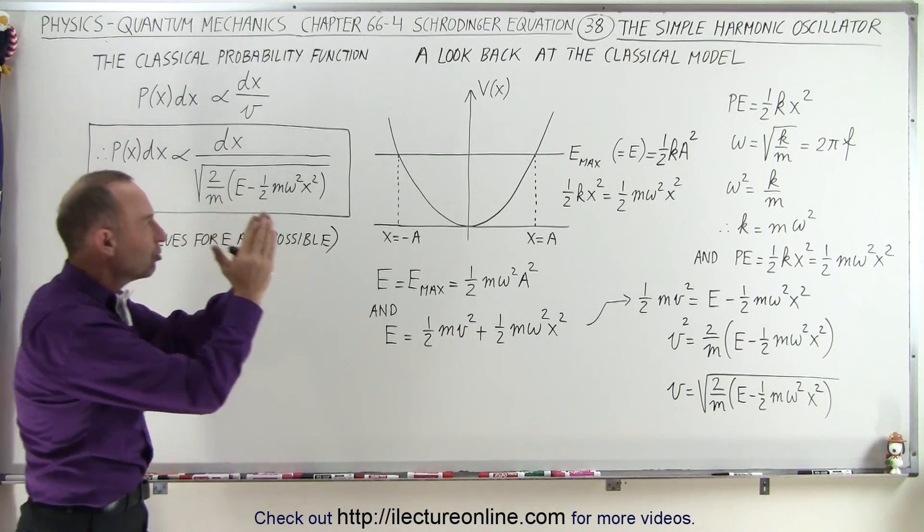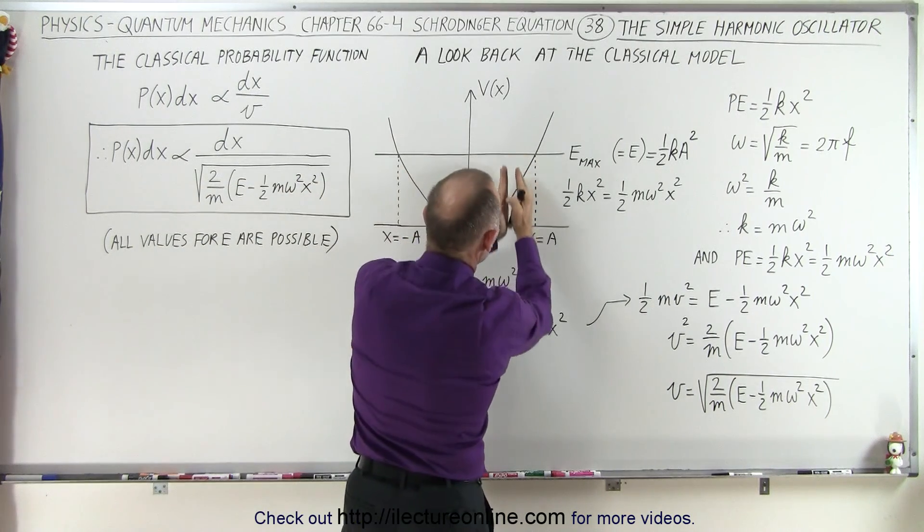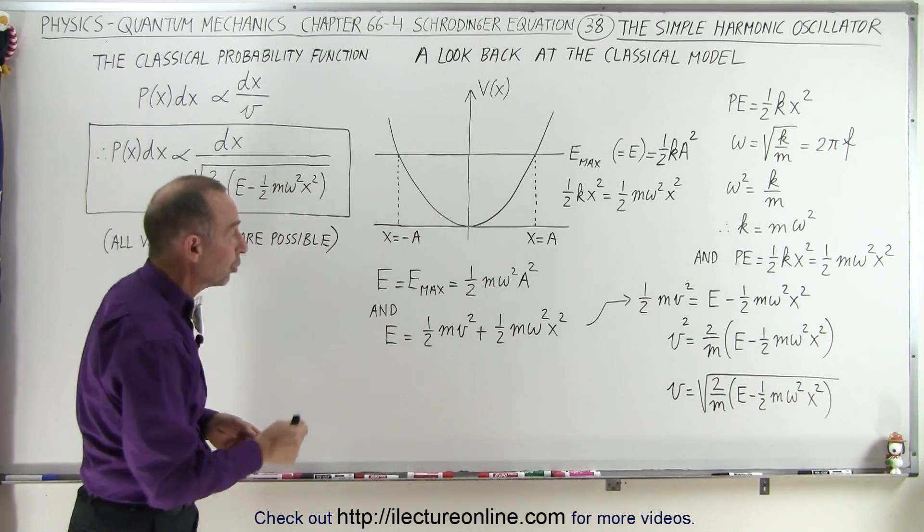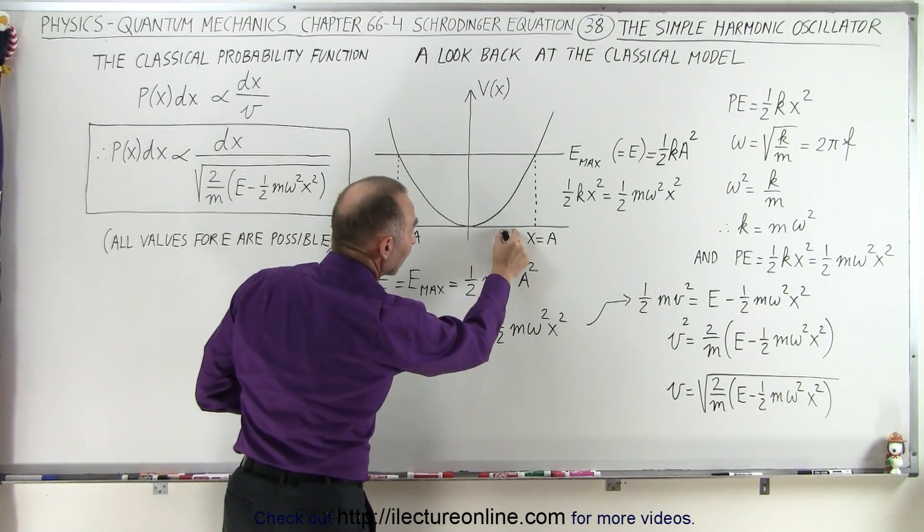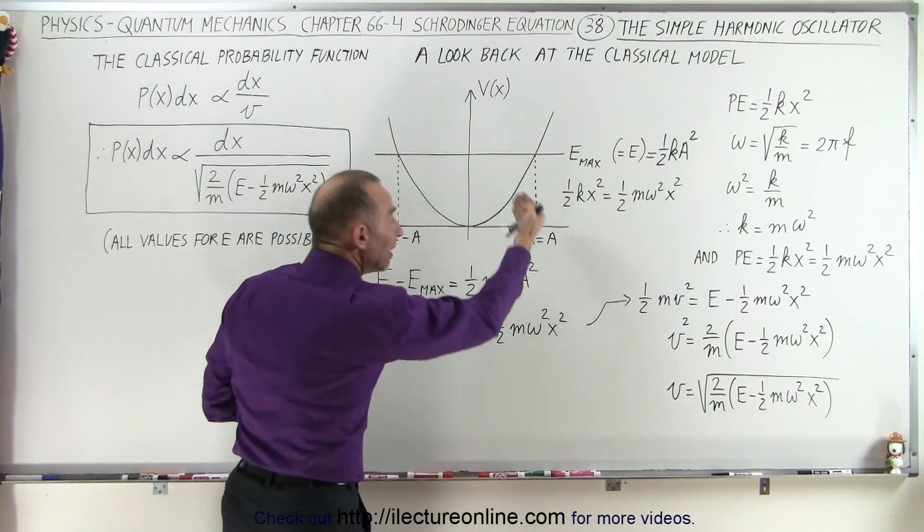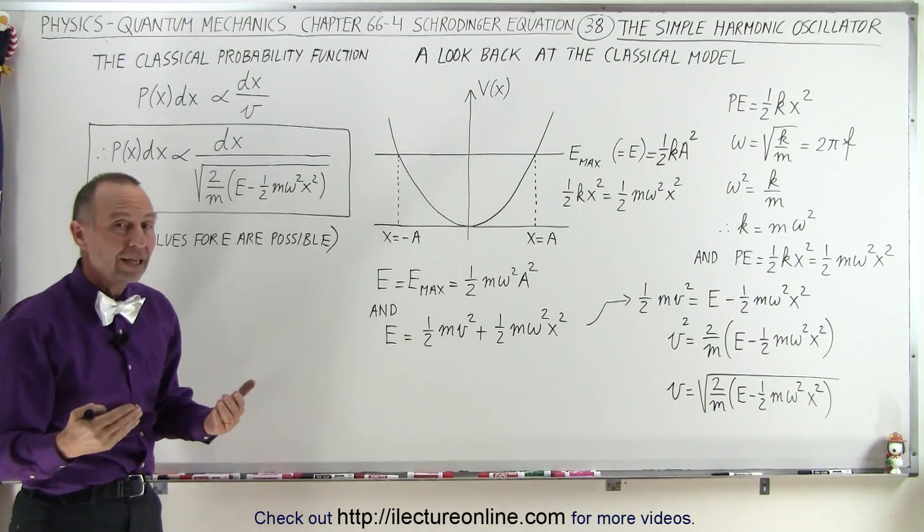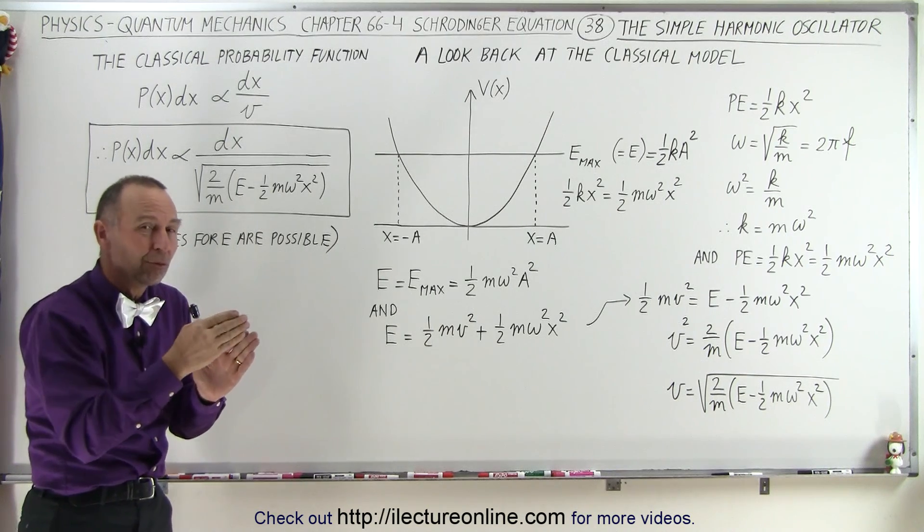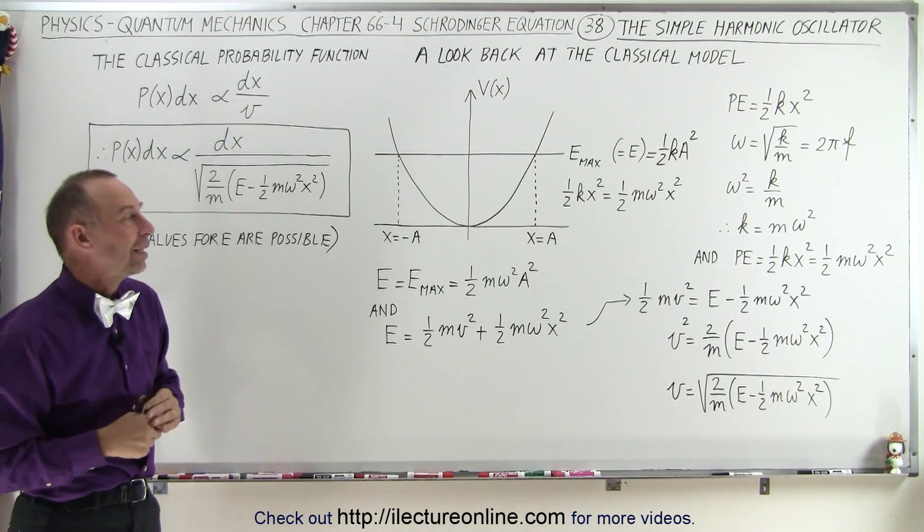If I take a small region, like right here in x, and I want to know what's the probability of finding the particle there, it's going to be proportional to how wide that dx is and inversely proportional to the velocity. The faster it moves, the less likely I'm going to find it there. The slower it moves, the more likely I'm going to find it there.